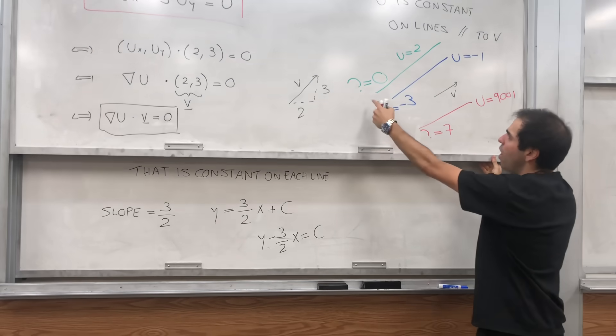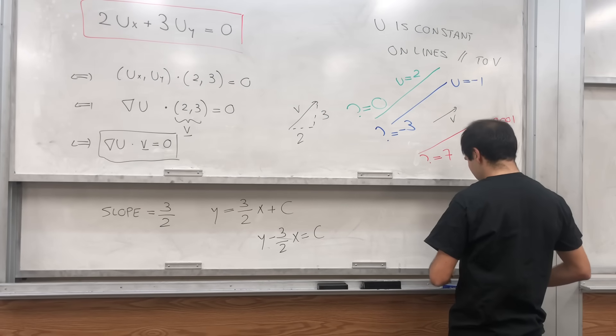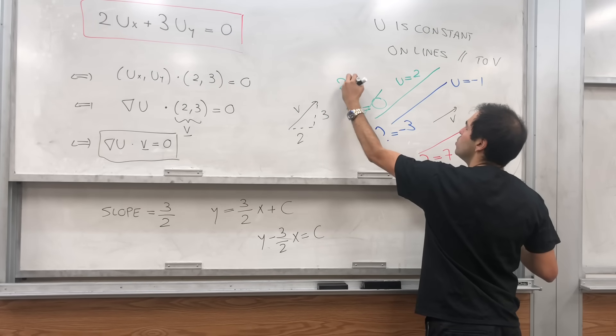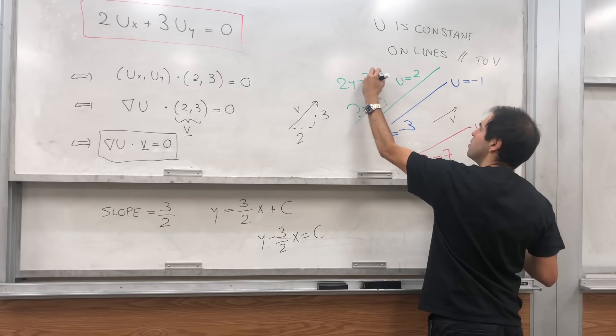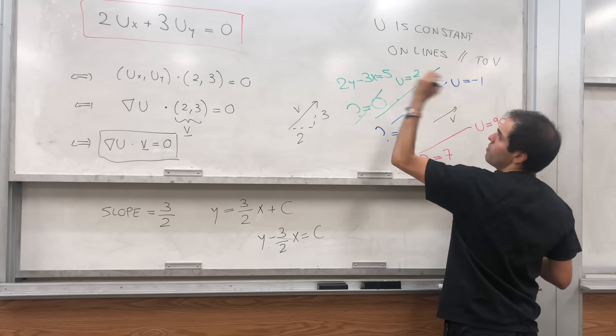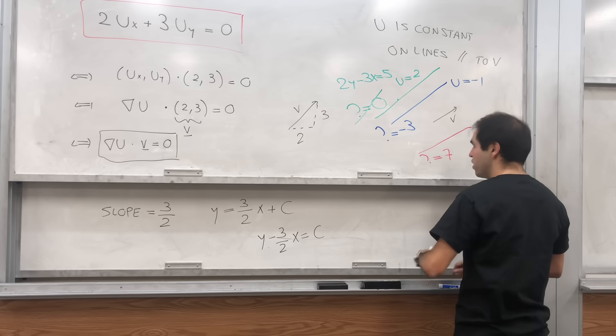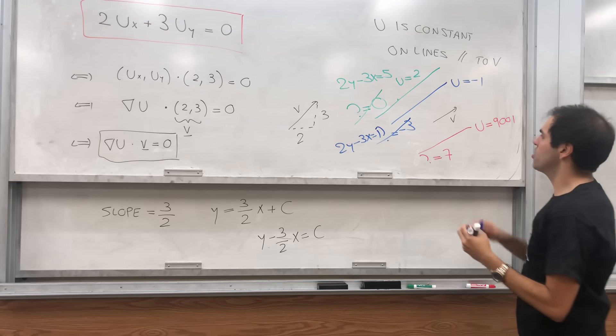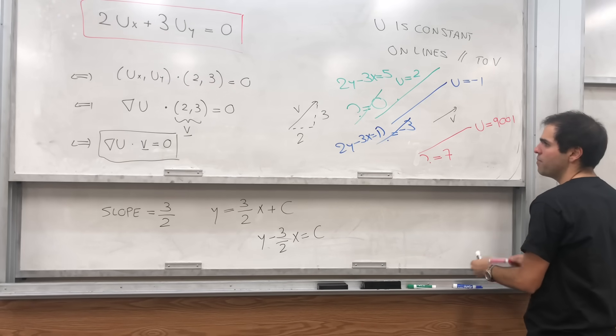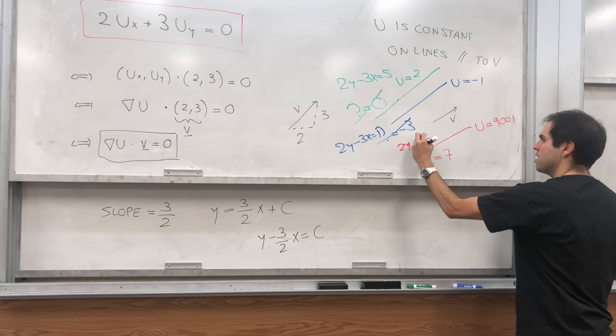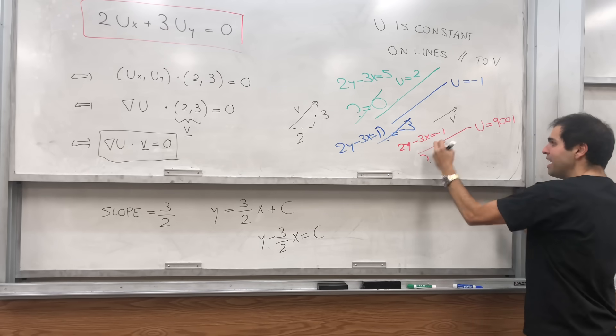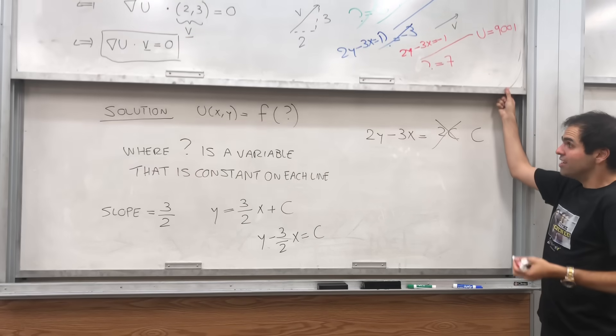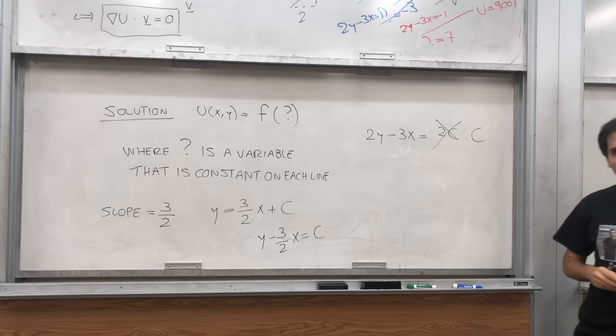For instance, if 2y minus 3x is 5, then it might mean we're on this line. Or if 2y minus 3x is 1, then we're on this line. Or if 2y minus 3x is minus 1, then we're on this line. So notice, this actually solves our problem.